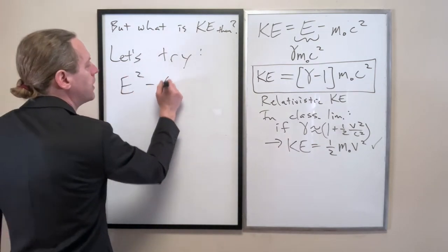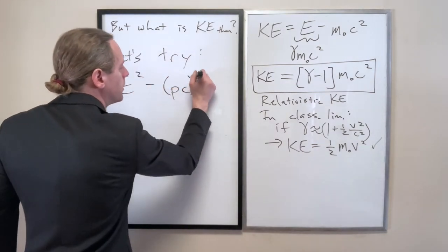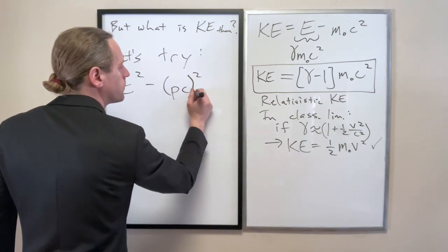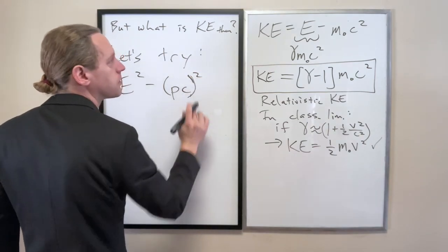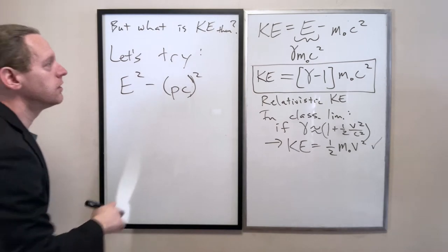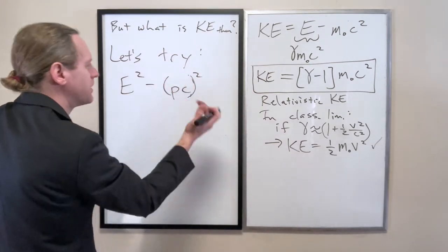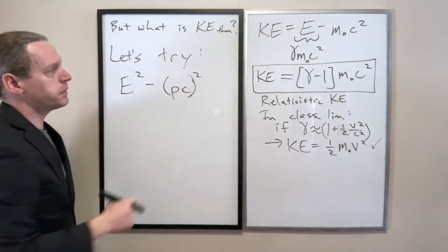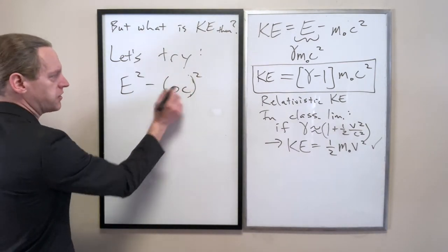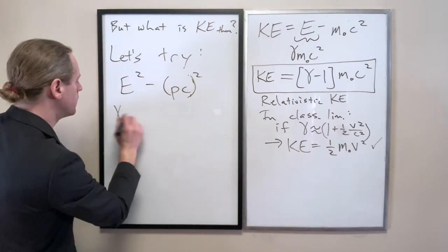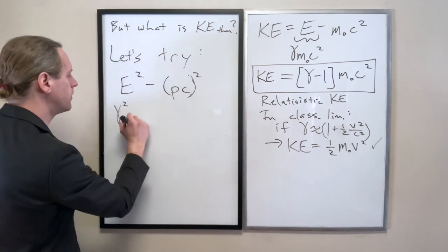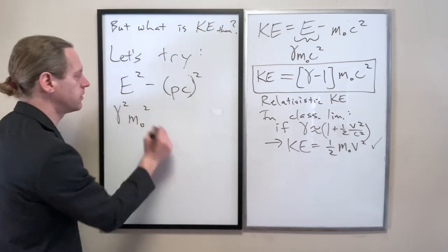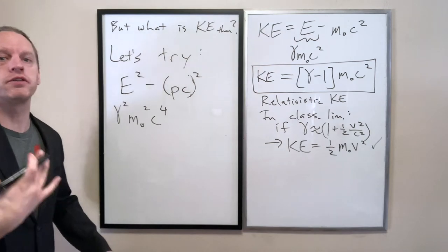Let's take E squared minus this combination here, PC squared. So there's a reason for doing so here. But if we take this here, E squared minus PC squared, in this case this is gamma squared M naught squared C to the fourth by our relativistic energy.